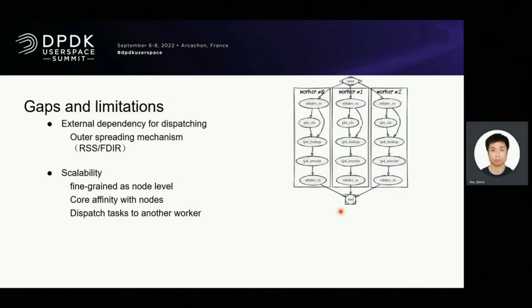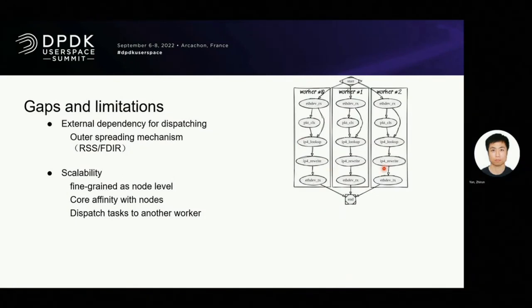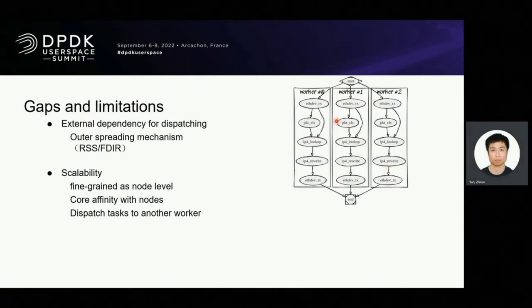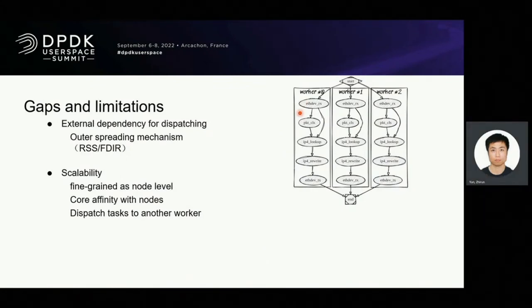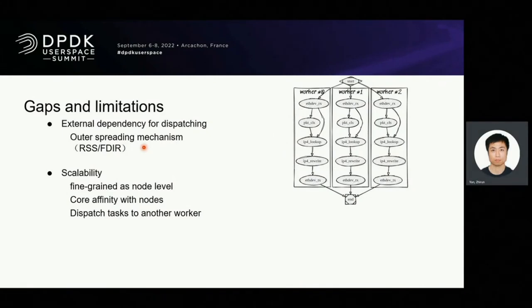We could scale up with full graph like this. Each worker will apply Layer 3 forward. Worker 1 and Worker 2 will be duplicated with Worker 0. This is excellent for core scaling, but it depends on an external mechanism, such as RSS flow director to spread the streams before the source node.